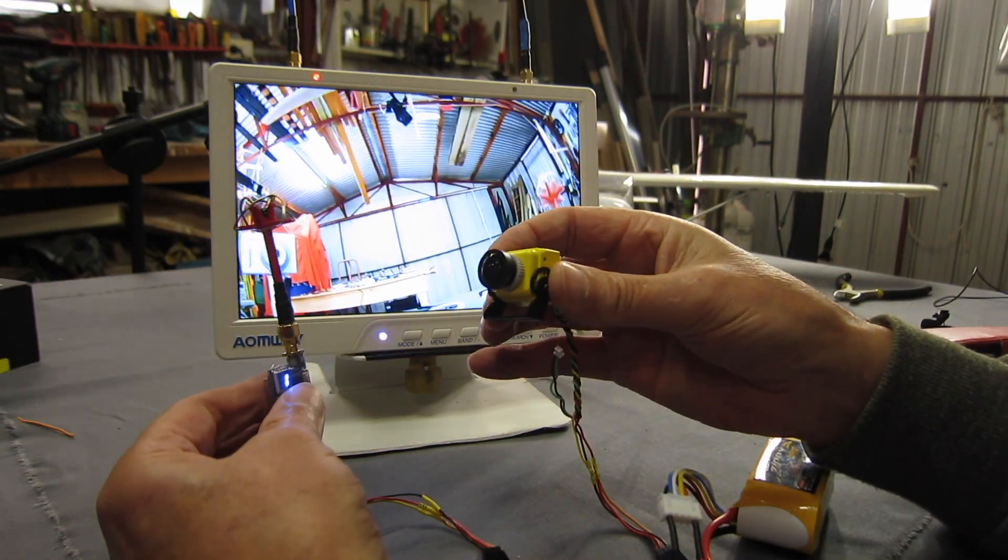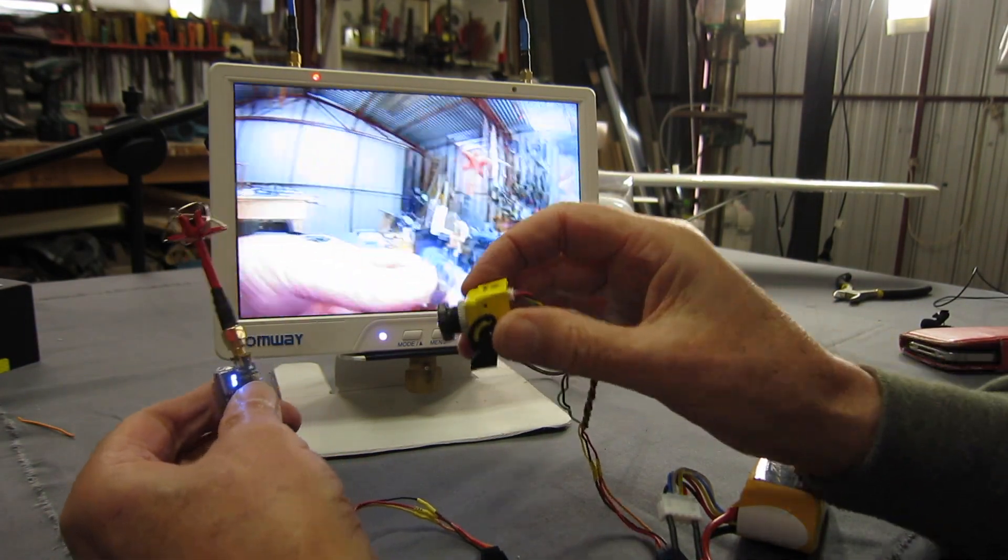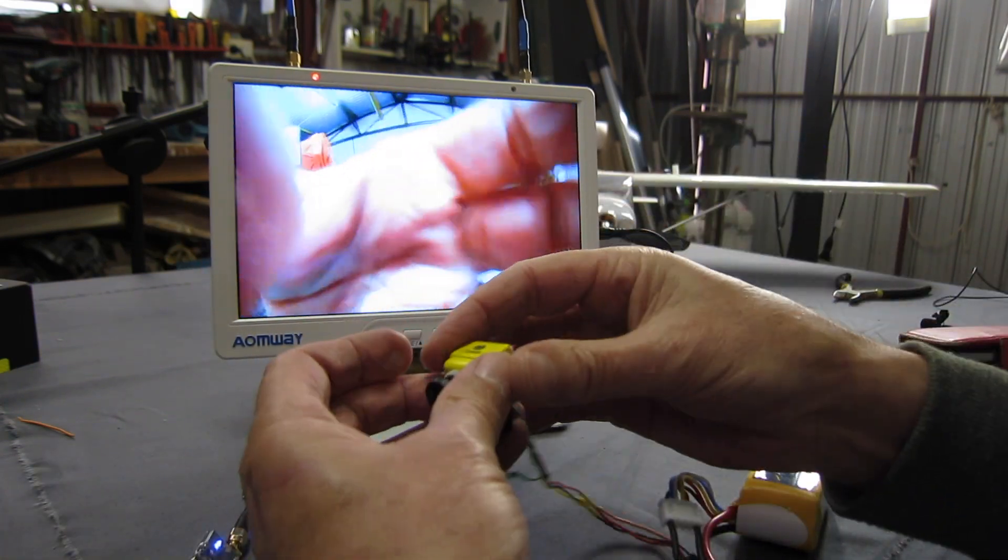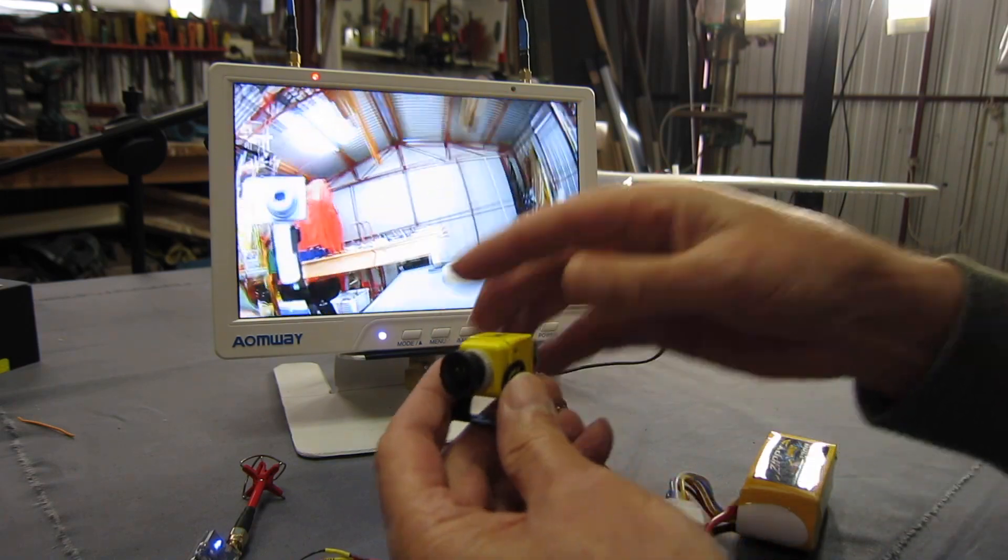Okay. All we have to do is mount this on our little mount. And we are ready to pop it on the plane and go for a fly. Actually I'll check out the on screen display settings a little bit later on too. Once we get it all mounted up and ready to go.